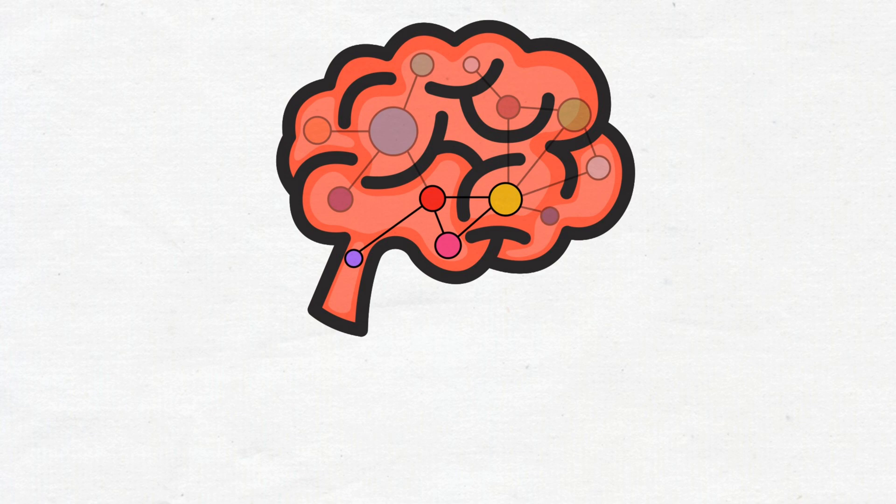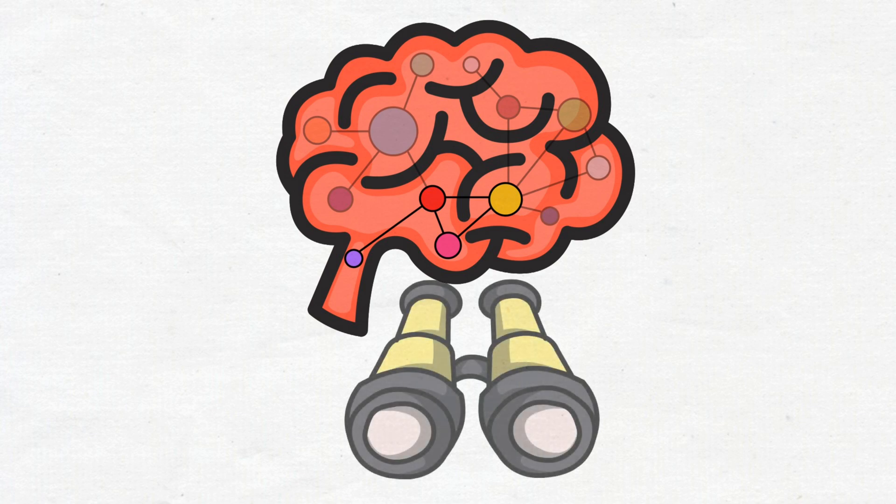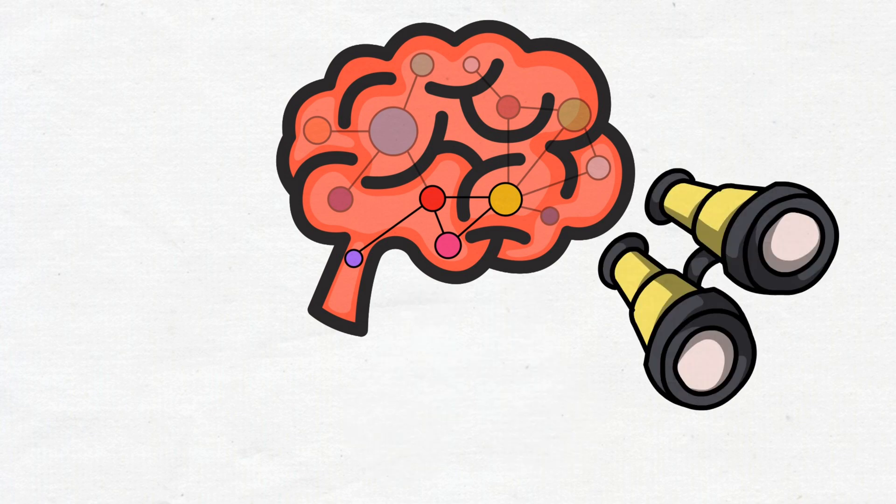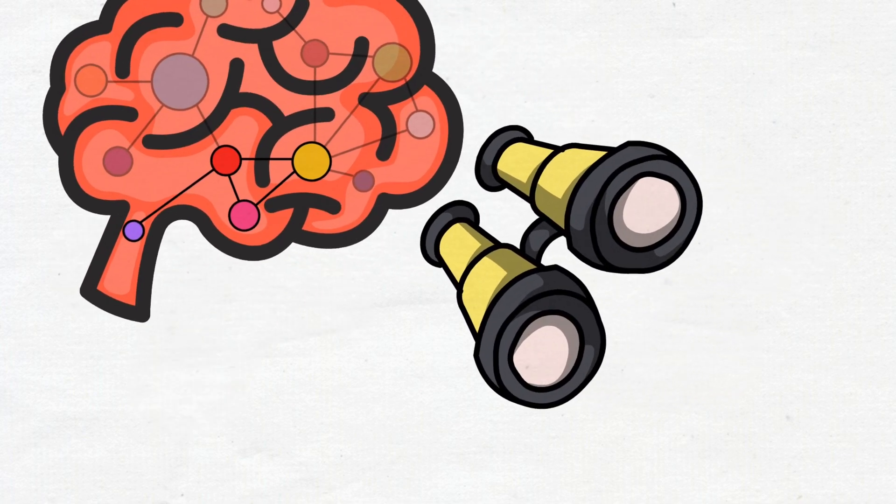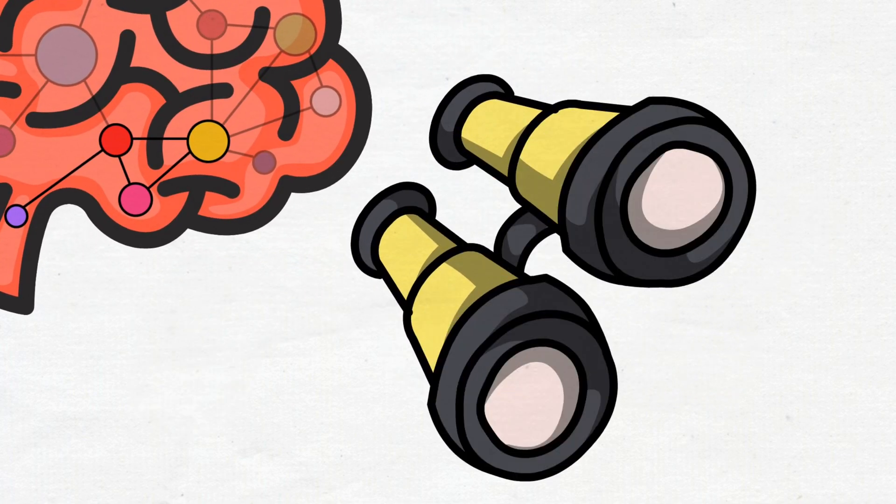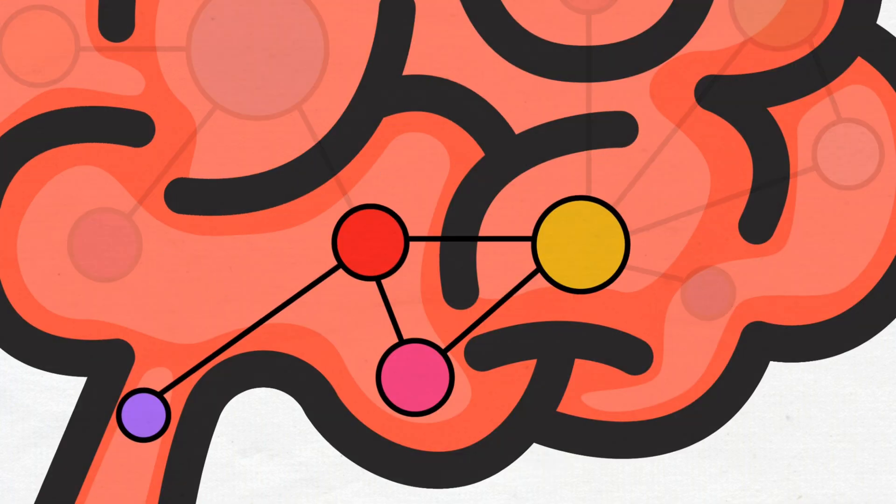An important thing about the defense circuitry is that it's always on, and always automatically and outside of awareness, scanning for danger. And the moment an attack is detected, the defense circuitry quickly dominates brain functioning.